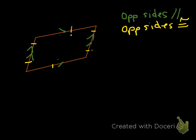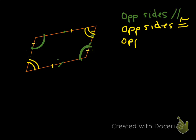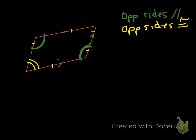Now, after those things are true, we know that opposite sides are parallel and opposite sides are congruent. The third thing is that opposite angles are congruent. So this angle is congruent to that angle, and this angle is congruent to that angle. So opposite angles are congruent.